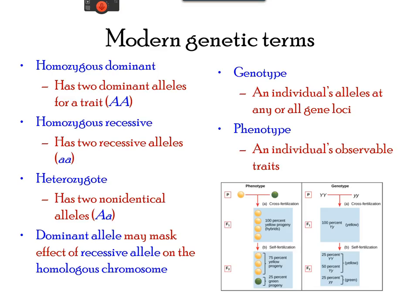Mendel used some genetic terms we need to understand. The expressed characteristic of an organism is referred to as phenotype. The genetic makeup of this characteristic is called the genotype. For each trait studied by Mendel, he explained that the trait was carried by two alleles, one on each of the homologous chromosomes. He called the alleles homozygous if they were identical, and in a hybrid combination, two contrasting traits were called heterozygous.